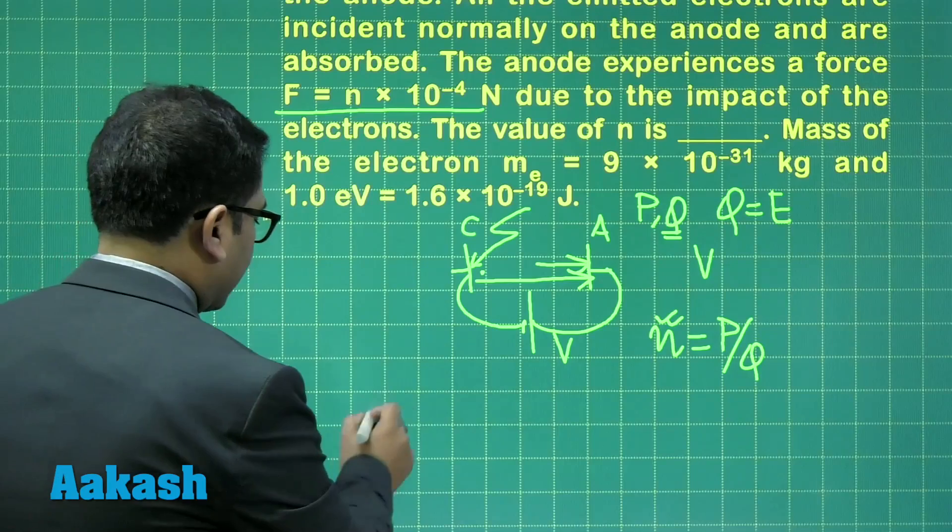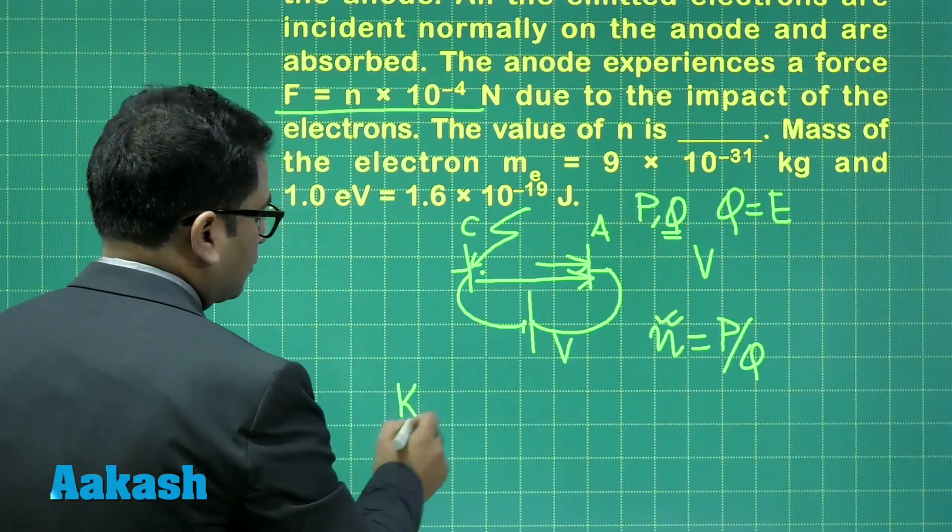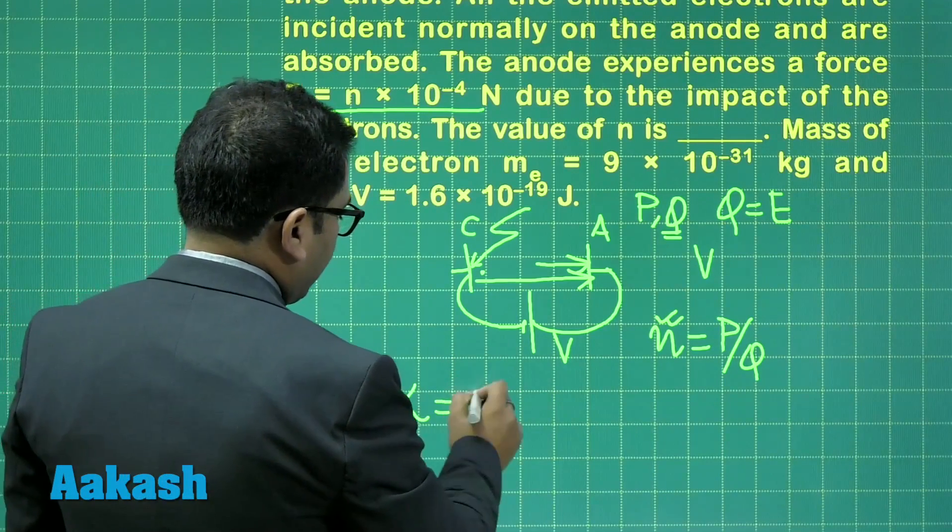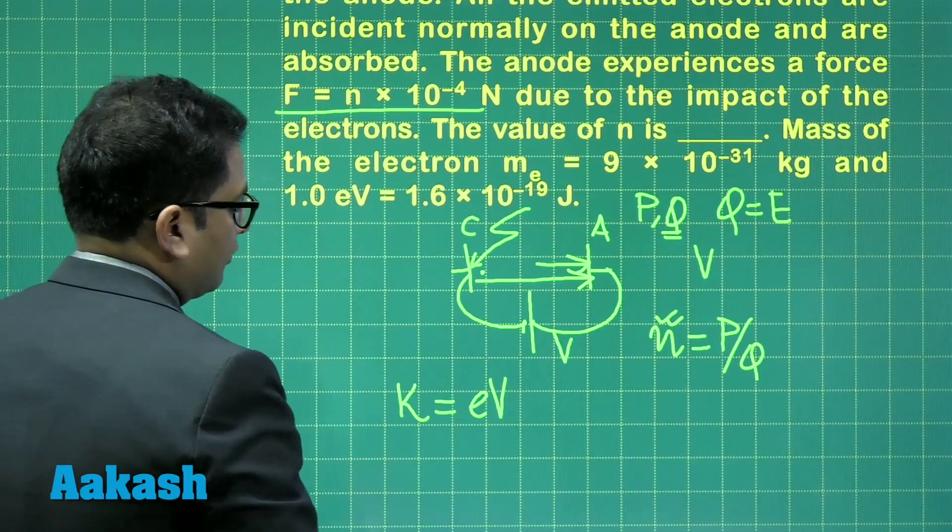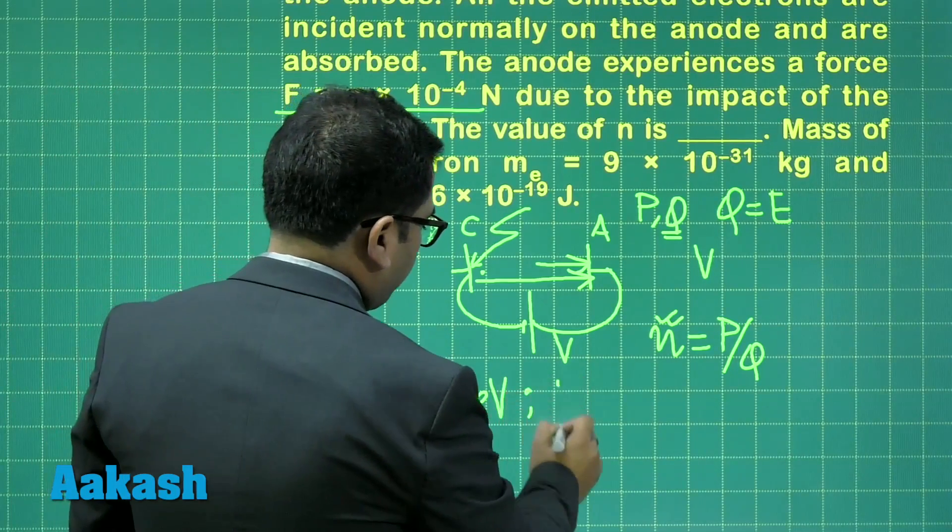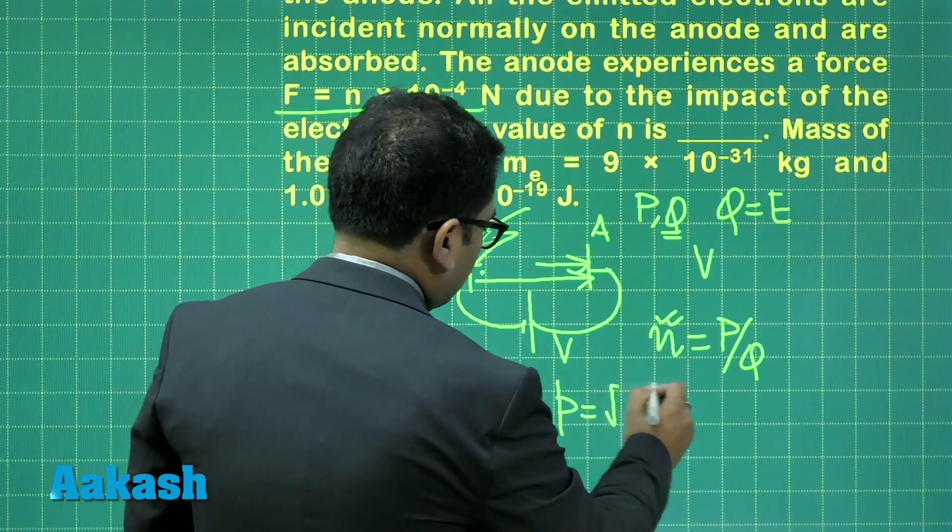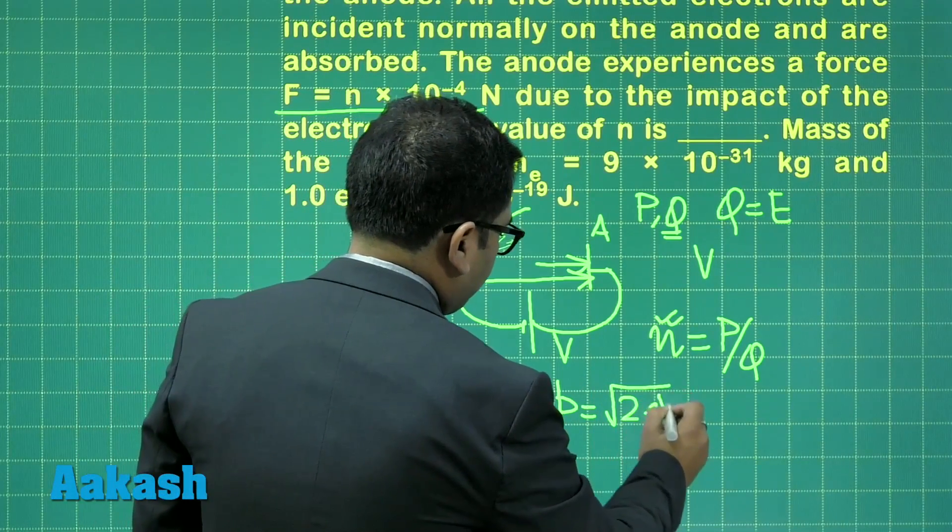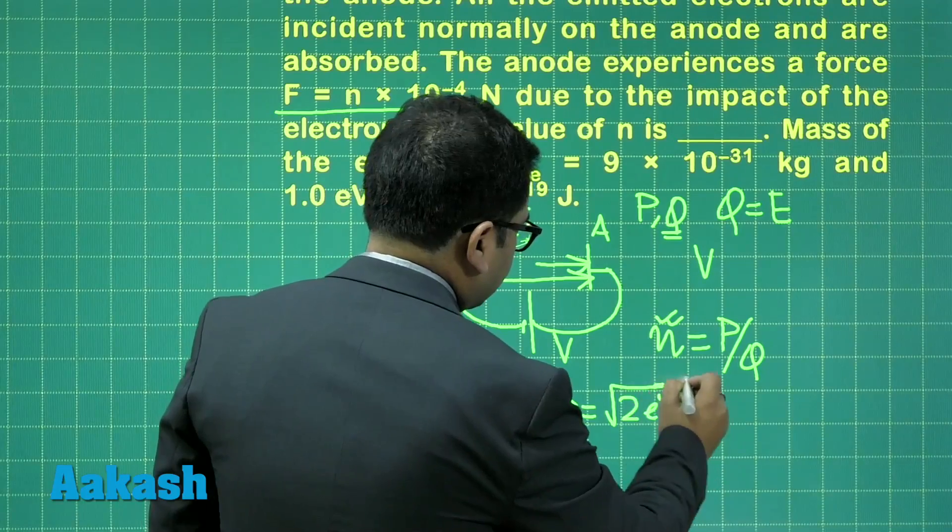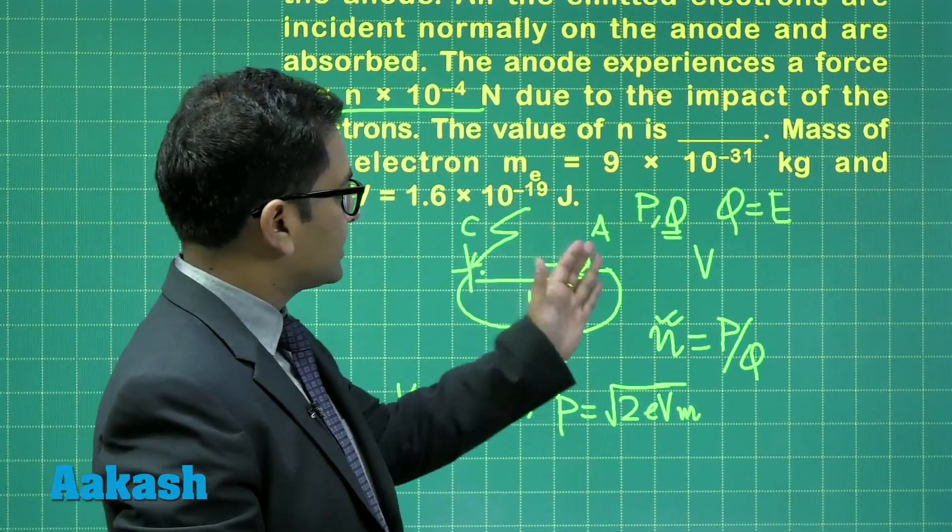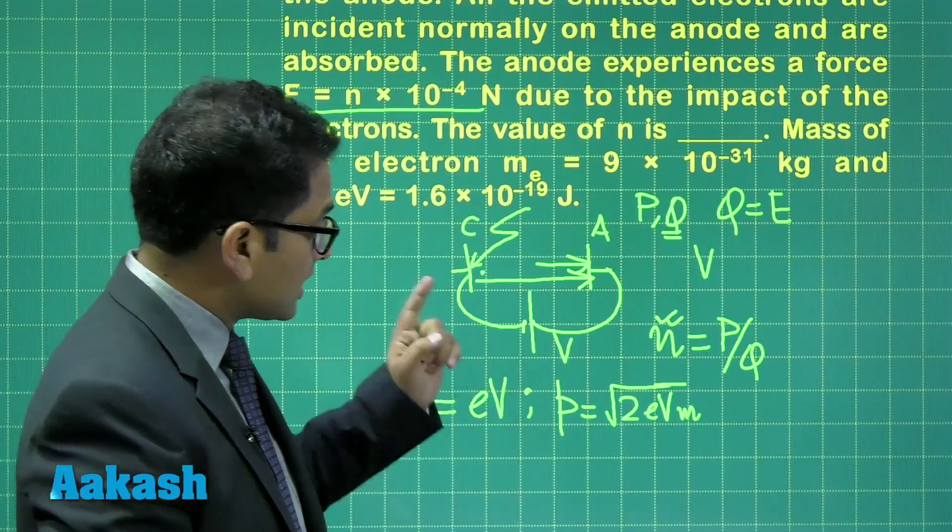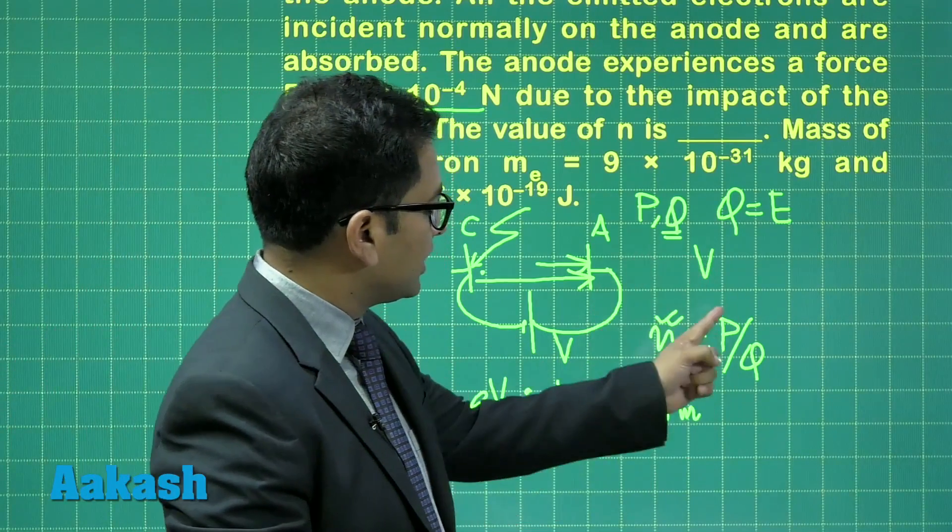So let us see, what is the kinetic energy of one electron by the time it reaches the anode? And that's going to be e times V. And with this kinetic energy, the momentum can be written as root of 2eV times m. So that's the momentum of one electron when it hits the anode. And the number of electrons striking per unit time is this.